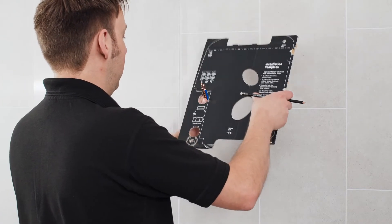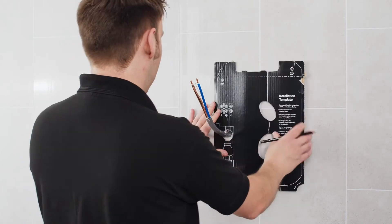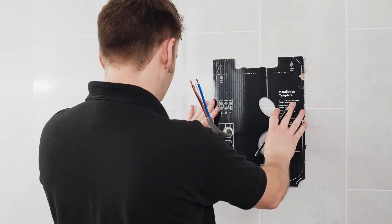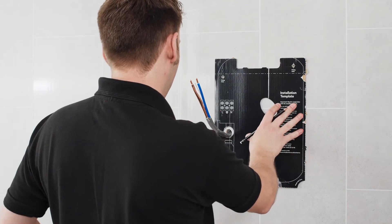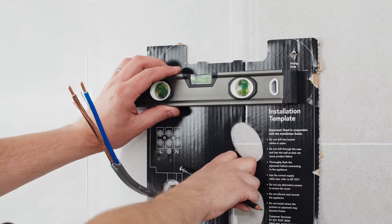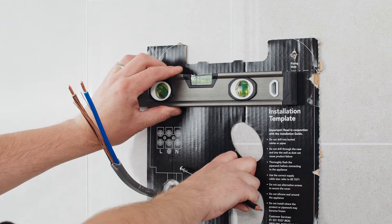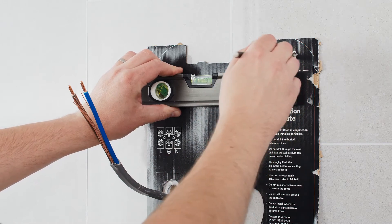Ideal for use on new and retrofit installations, the template can be used to mark out the water and electrical points for first fixes or for using the existing services as a reference point before marking the fixing points to secure the shower unit to the wall.